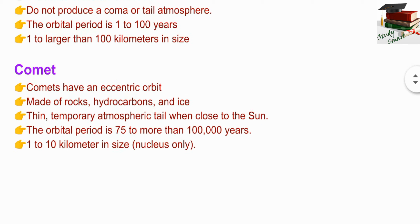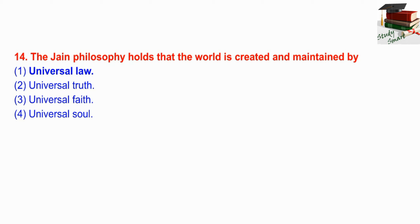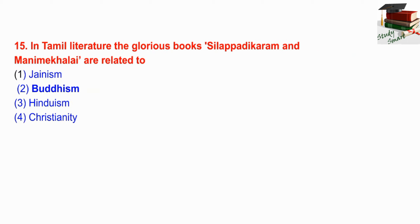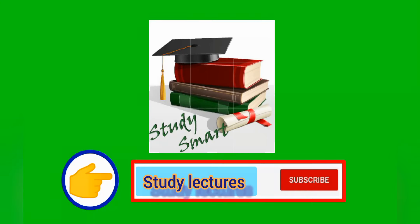Comets have an orbital period of 75 years to more than one lakh years, and are one to ten kilometers in size. Next question: the Jain philosophy holds that the world is created and maintained by universal law. Last question: in Tamil literature, the glorious books Silappadikaram and Manimekalai are related to Buddha and Jain.